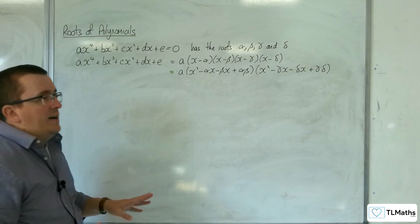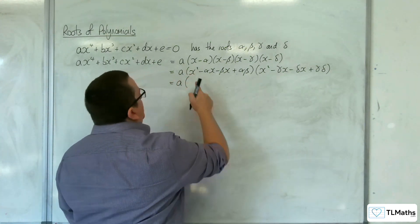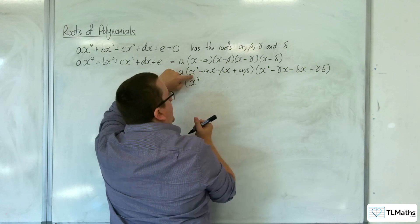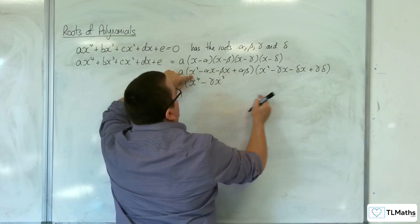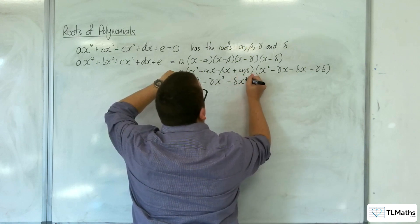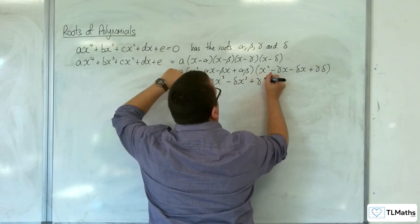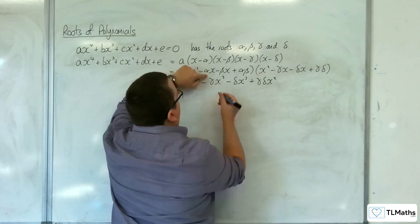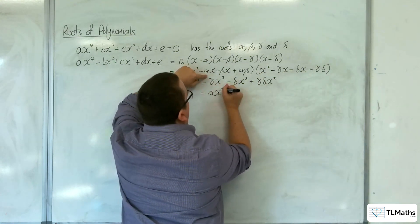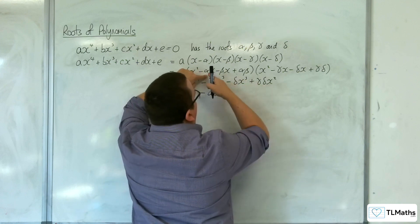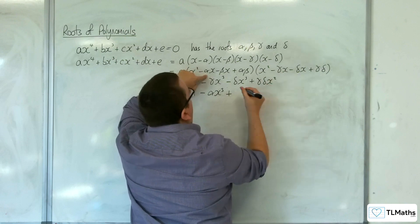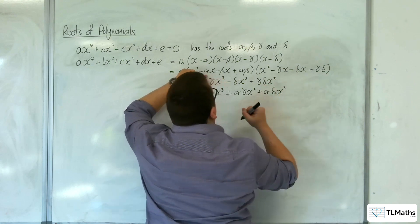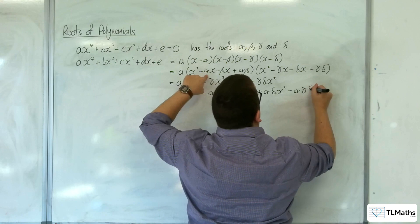Now I need to expand those two brackets out. We get x⁴, then x² times −γx gives −γx³, then −δx³, then +γδx². Then −αx multiplied through gives −αx³, then +αγx², then +αδx², and finally −αγδx.